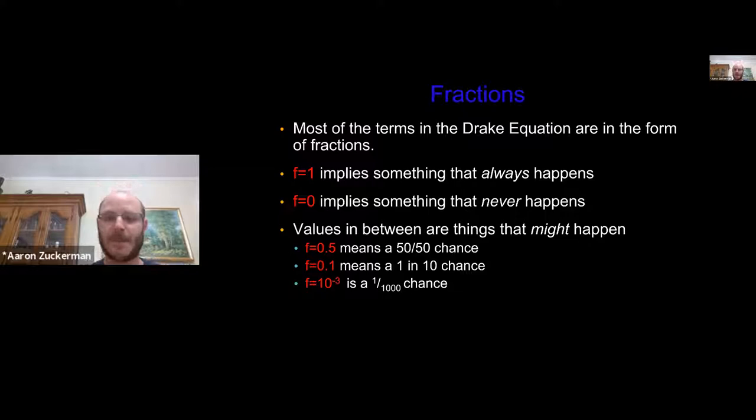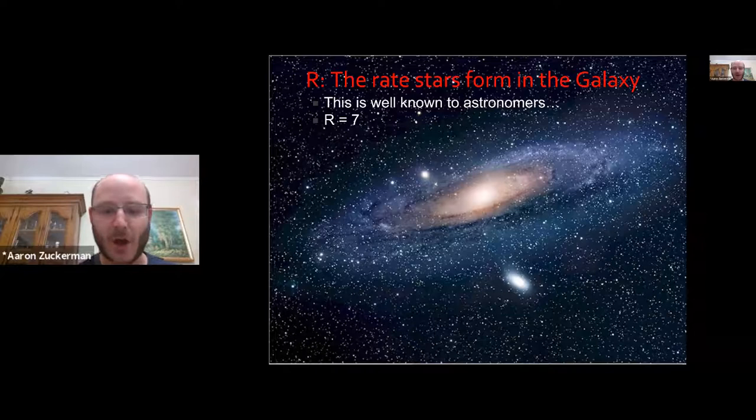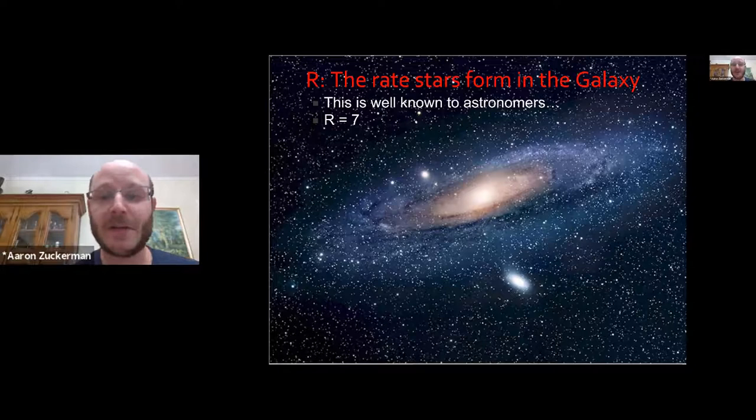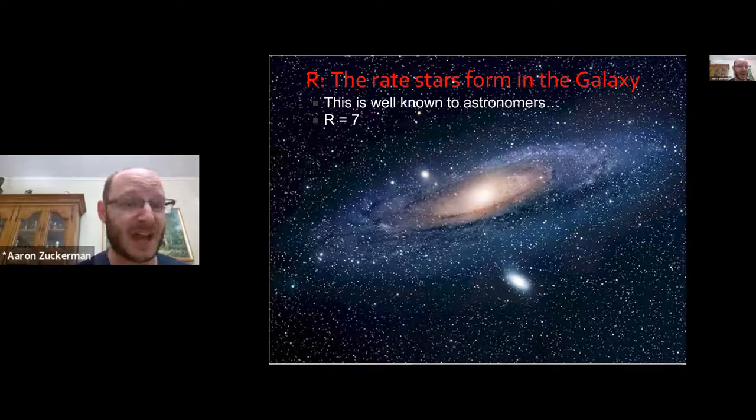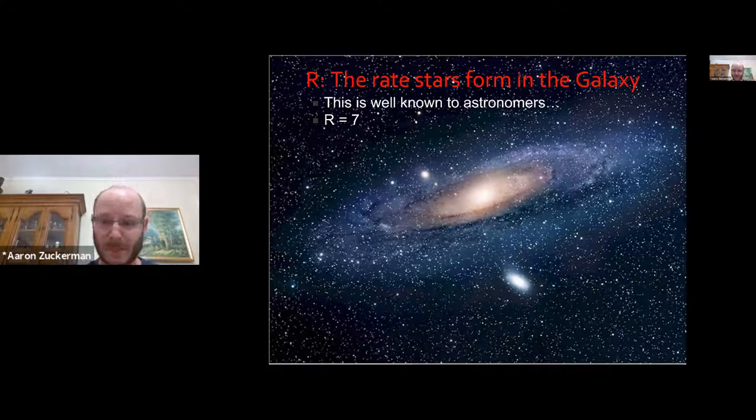So the first thing we need to know is the rate that stars form in the galaxy. We know this. It's kind of 7. Sometimes you'll see 10, sometimes less. But we're just going to go with 7. That's the best number that we have. That's not really something we can discuss on our own. You need a degree in cosmology. So we know that the rate at which stars form is about 7 a year.